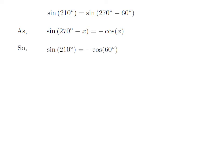Let us apply the above identity for sine of 210 degrees. Here, x is 60 degrees, so sine of 210 degrees is equal to minus cosine of 60 degrees.